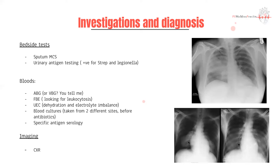On imaging, a chest x-ray is very useful as it shows how disseminated the infection is, which area and lobe is affected, and allows serial imaging to monitor progression. FBE looks for leukocytosis, UECs ensure no dehydration or electrolyte imbalances, blood cultures should be taken from two different sites before antibiotic therapy, and specific antigen serology can be done for unusual hospital-acquired bugs.